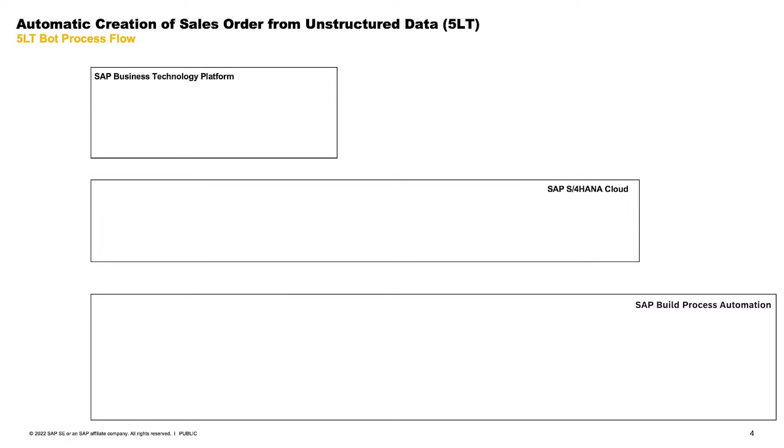Let's now run through the 5LTBOT process flow, which shows how the bot can be used to turn a purchase order email into a sales order in SAP S/4HANA Cloud. In this flow, you can see where each part of the process occurs: Process Automation, SAP S/4HANA Cloud, or SAP Business Technology Platform. We start with the purchase order email.